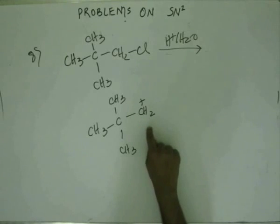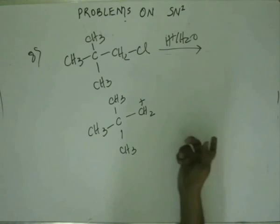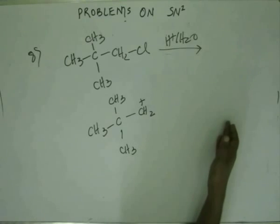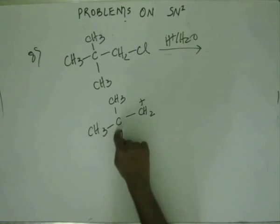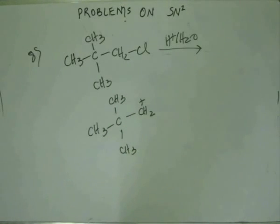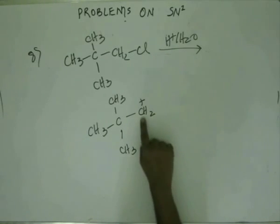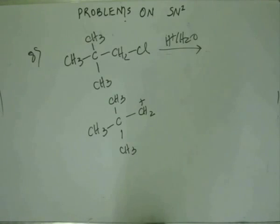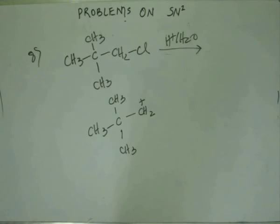Let's check: is there any resonance here? No, there isn't. Is there any hyperconjugation? No, because at the alpha position you don't have any hydrogen — the C-C bond is a strong bond and will not participate in hyperconjugation. So we have to think about how to stabilize this carbocation. If no factors operate to stabilize it, this carbocation will be unstable enough not to form under normal circumstances. Remember: when you don't have resonance or hyperconjugation, carbocations are very unstable and not formed at normal room temperature.